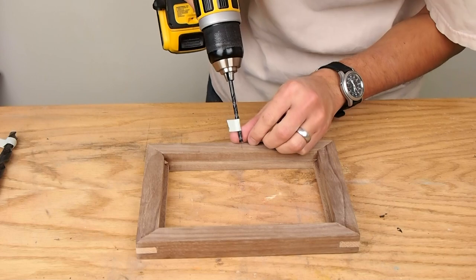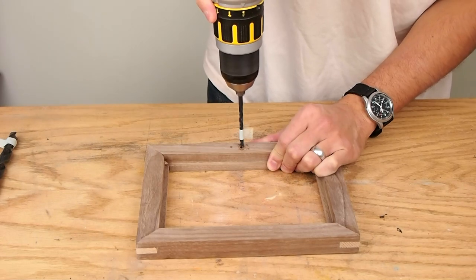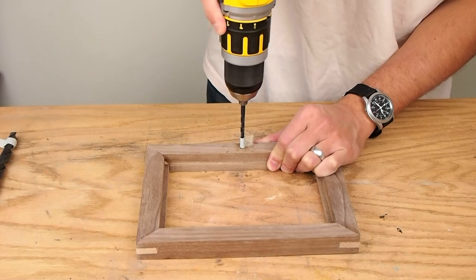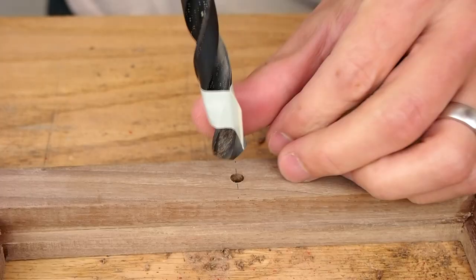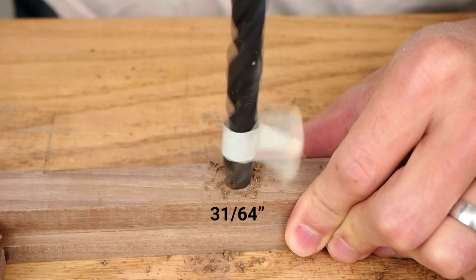Then I drilled a pilot hole on the back of what would become the bottom of the frame. I drilled this hole out to just under a half an inch to a depth of about half an inch. I think I used a 31/64 inch drill bit.